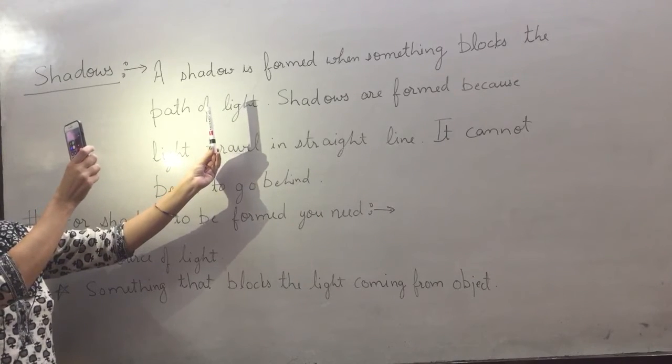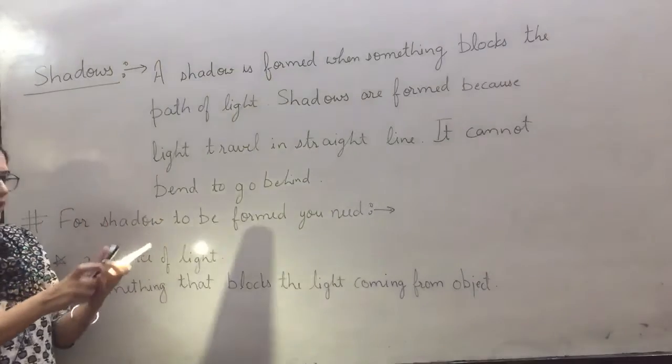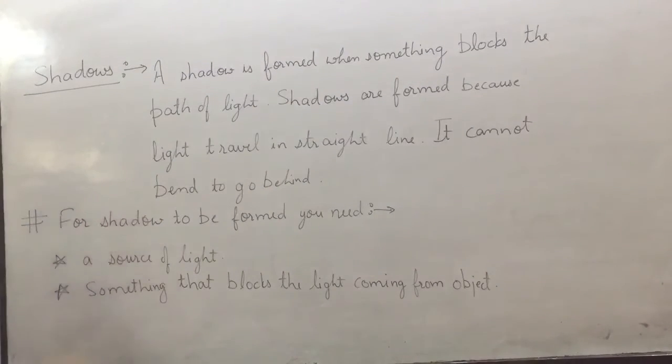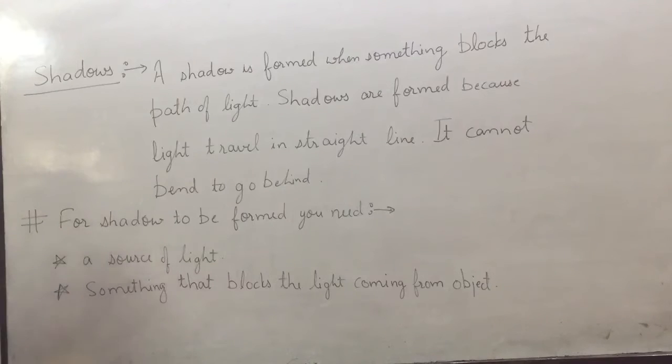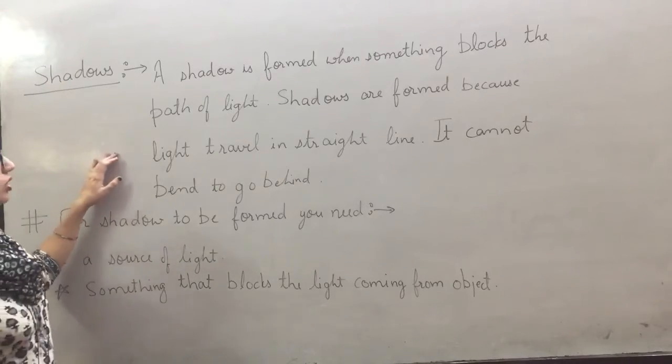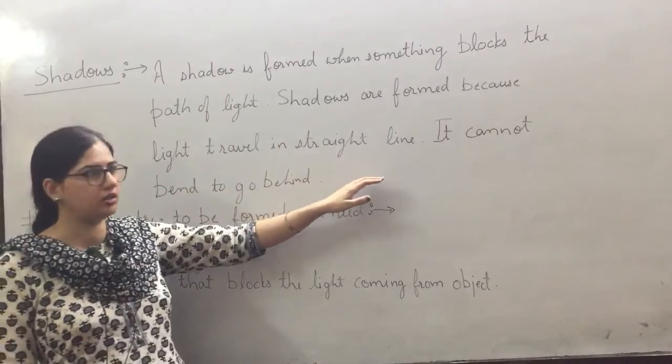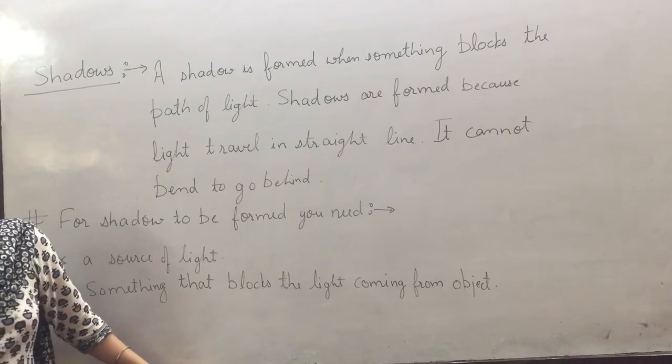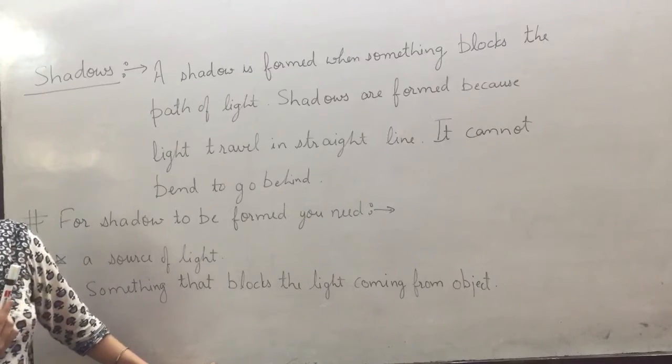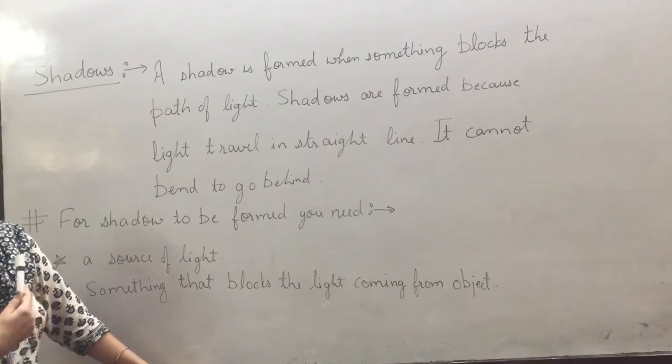Light always travels in a straight line. It cannot bend to go below. That is why a shadow is formed.